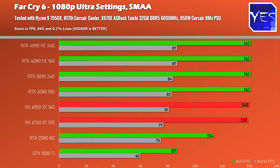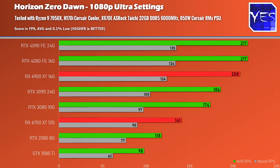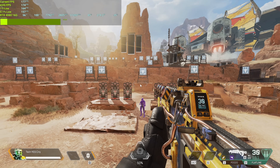For 1080p I only tested two games — Far Cry 6 and Horizon Zero Dawn — and at these resolutions at maximum settings, even with the latest 7950X and 6000MHz DDR5 memory, we were pretty much CPU bottlenecked. So just like in my RTX 4090 review, the RTX 4080 is not a 1080p gaming card. Getting these cards for 1080p gaming means leaving a lot of money and performance on the table.